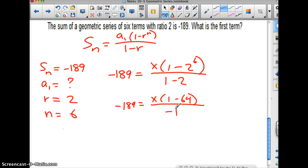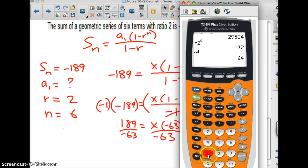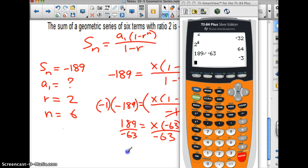So I've got 1 minus 64 all over a negative 1. At any time now, I'm really getting sick of this fraction here. I'm just going to get rid of it. I'm going to multiply both sides by negative 1. So that I can have 189 equal to x times 1 minus 64 is negative 63. And then I just divide both sides by negative 63. 189 divided by negative 63 is going to be negative 3. Negative 3 is x, and that is a sub 1.